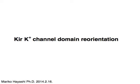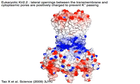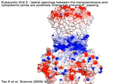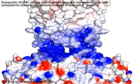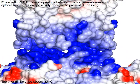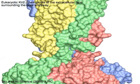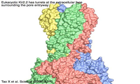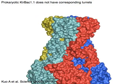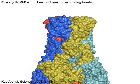In the KIR potassium channel domain reorientation, the eukaryotic KIR 2.2 has lateral openings between the transmembrane and cytoplasmic pores that are positively charged in blue to prevent potassium ion passing. Eukaryotic KIR 2.2 also has turrets at the extracellular face surrounding the pore entryway, whereas prokaryotic Kerboc 1.1 does not have corresponding turrets.